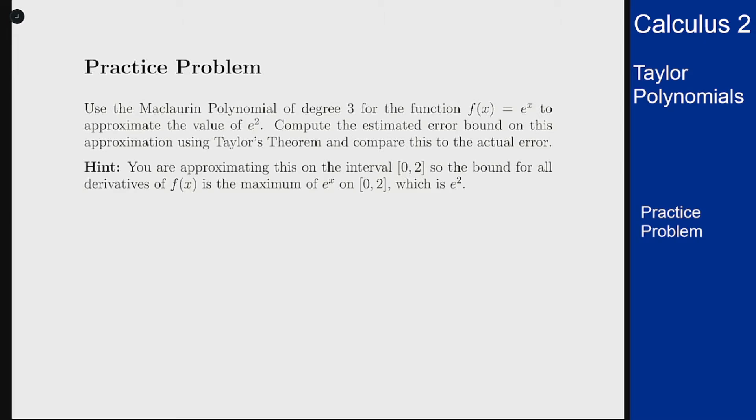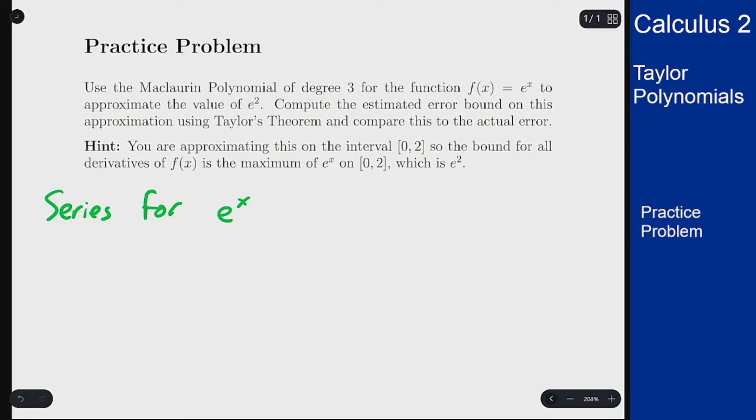So first we need to get the polynomial of degree 3 for this function. We know the Maclaurin series for e^x and that's the sum from n = 0 to infinity of x^n over n factorial. And so to get the polynomial of degree 3 I just want the first four terms up to degree 3 of this series.